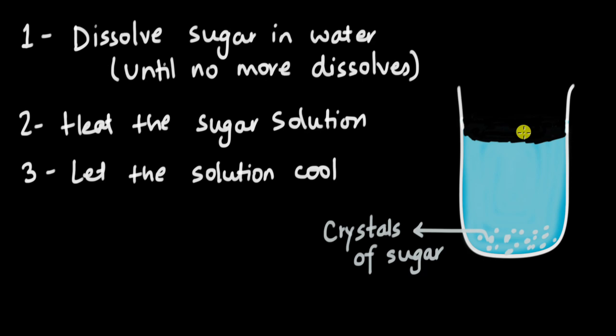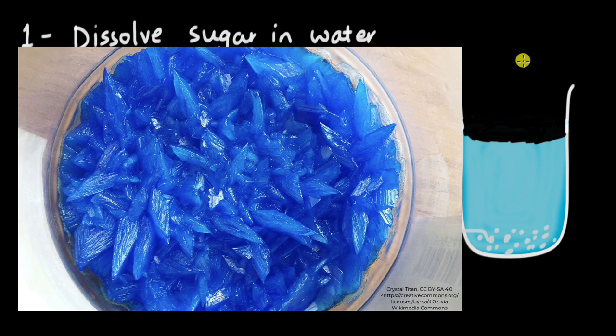This can be carried out with many other types of ingredients. For example, copper sulfate has blue crystals. How do you get these blue crystals? You can crush copper sulfate, dissolve it in water, heat the solution, then let it cool, and you will get those beautiful looking blue crystals of copper sulfate.